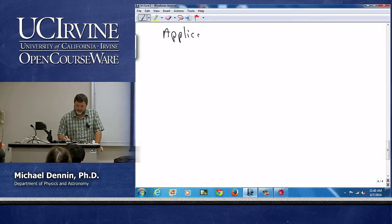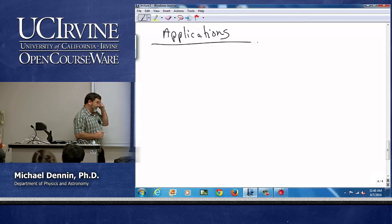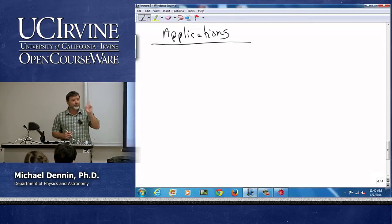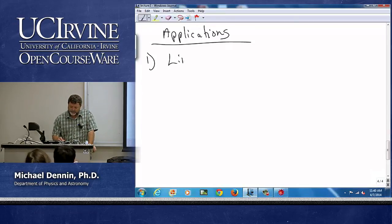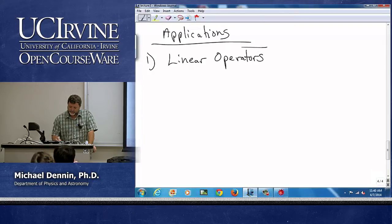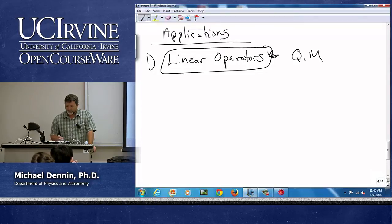If I was going to say in physics where we have applications of matrices, the top two, probably the top one is they are a great way to represent linear operators. This is huge, it's used everywhere in quantum mechanics.